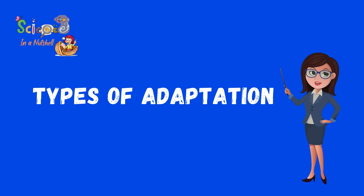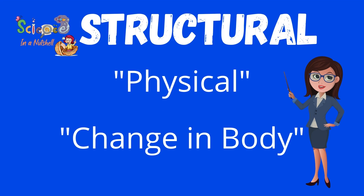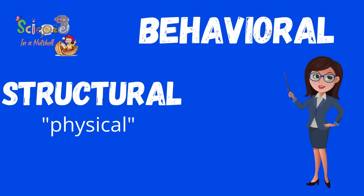We have two types of adaptation. The first one is structural adaptation, also called physical adaptation, which means a change in the body of the animal to adapt to its environment. The second type is behavioral adaptation, which is a change in the behaviors of the animal to adapt to its environment.